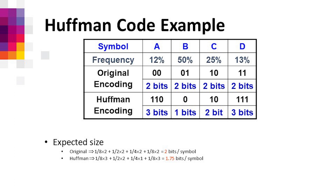Encoding of symbols with variable length, we optimize on the principle of fractional knapsack. In an example where A, B, C, D appear with frequencies 12, 50, 25, 13 percent respectively: with normal encoding we get 00, 01, 10, 11 — 2 bits each. With Huffman coding we get 110, 0, 10, 111 — using 3, 1, 2, 3 bits respectively.